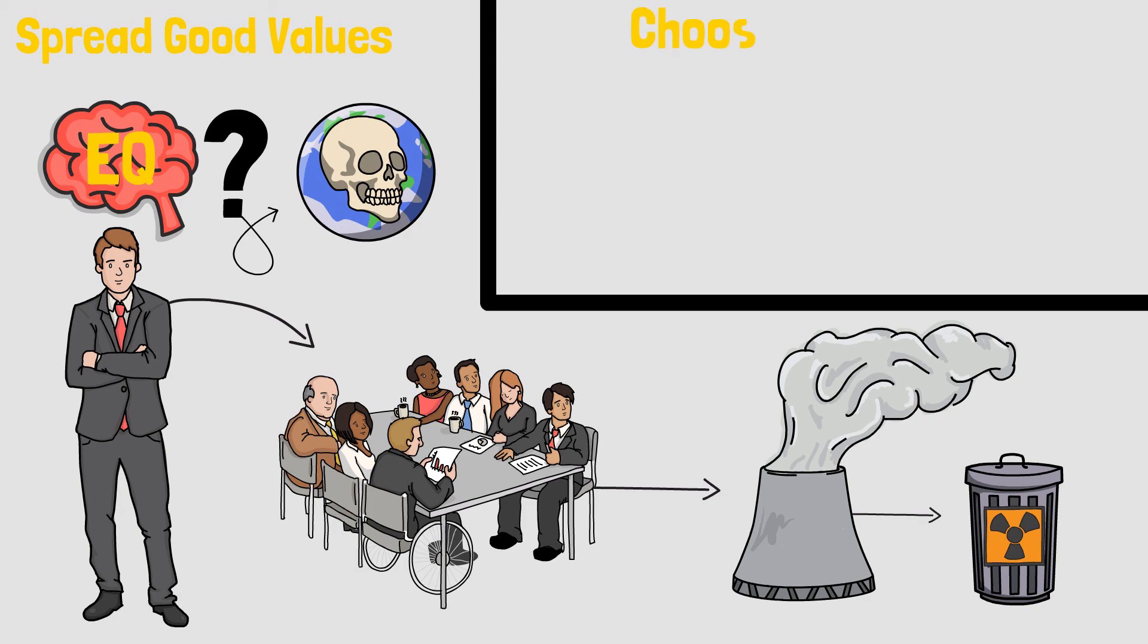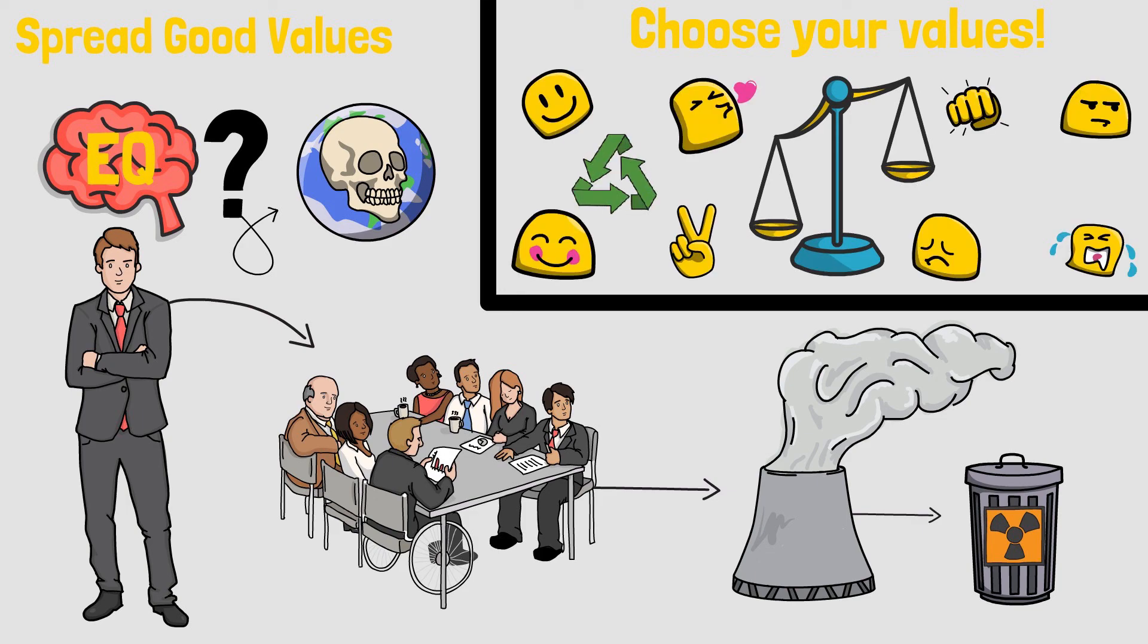You always have to choose your values. And your emotions will spread those values by motivating you to achieve whatever you want. Probably the most emotional intelligent skill you can develop is to determine your true values.